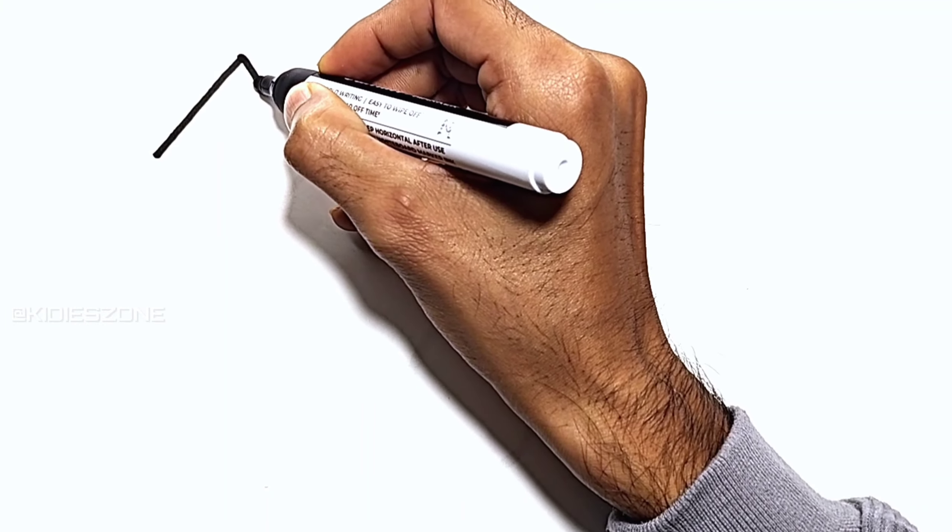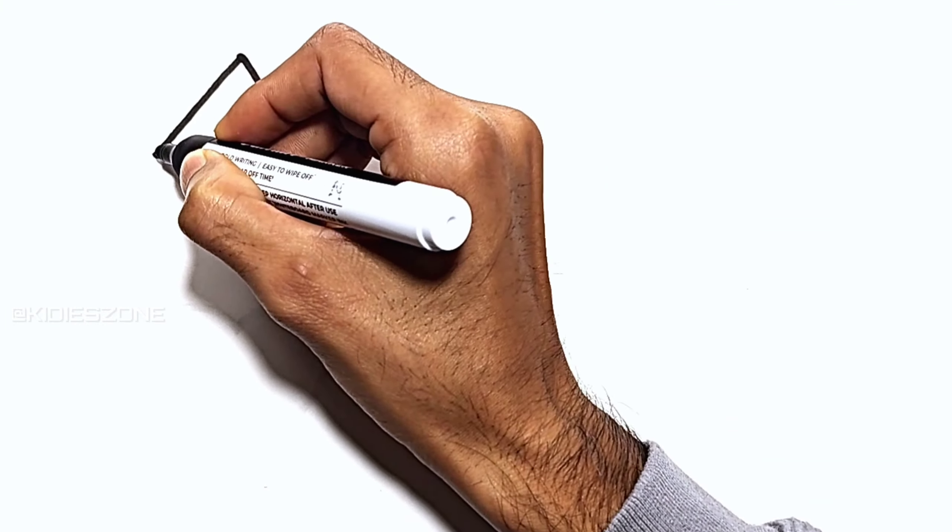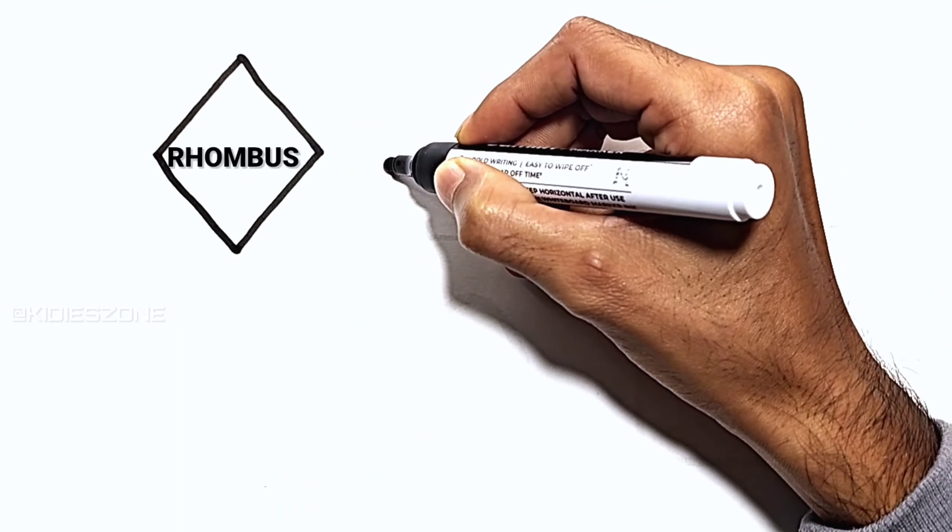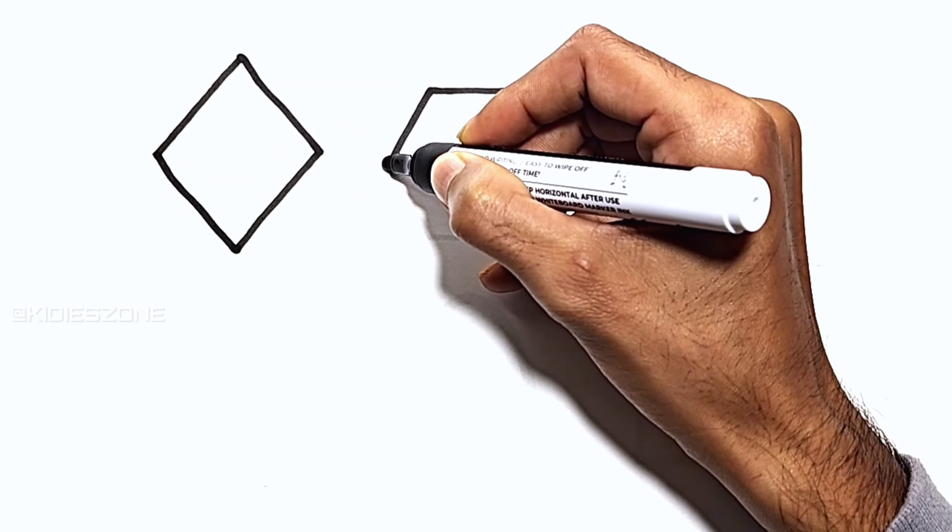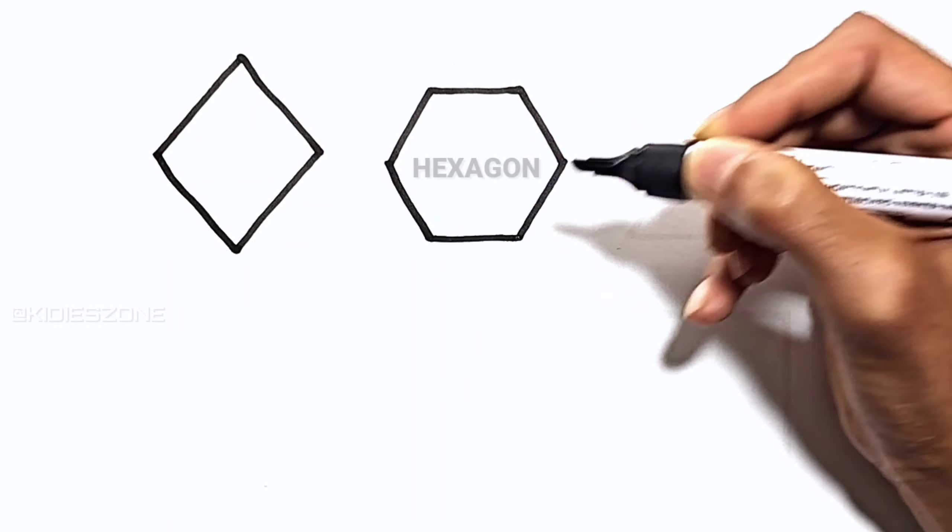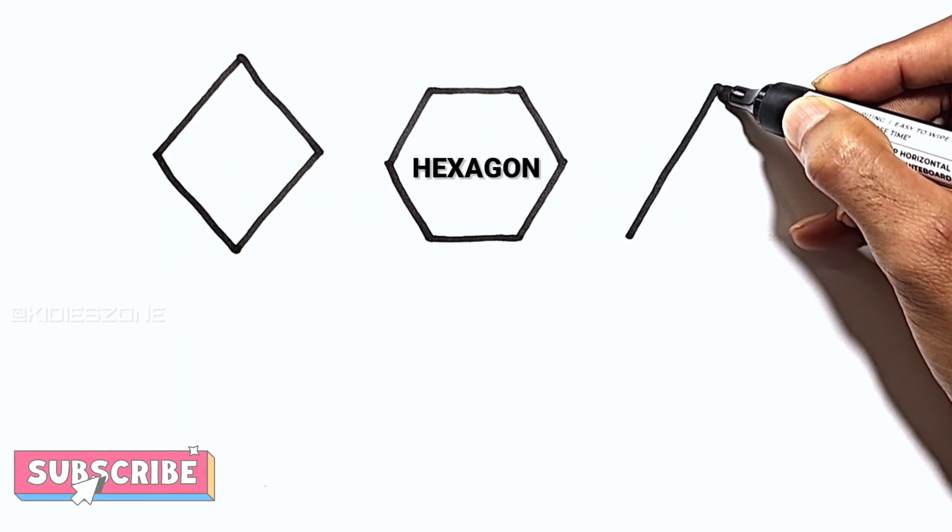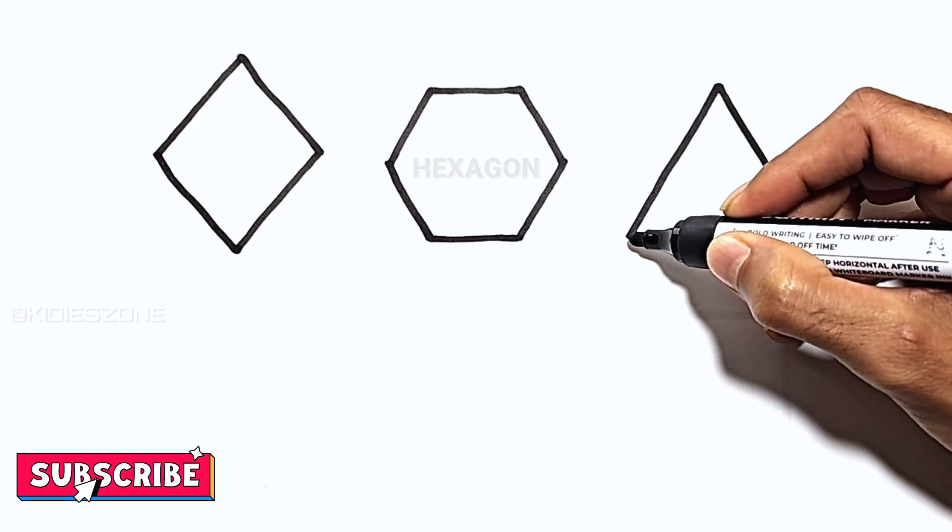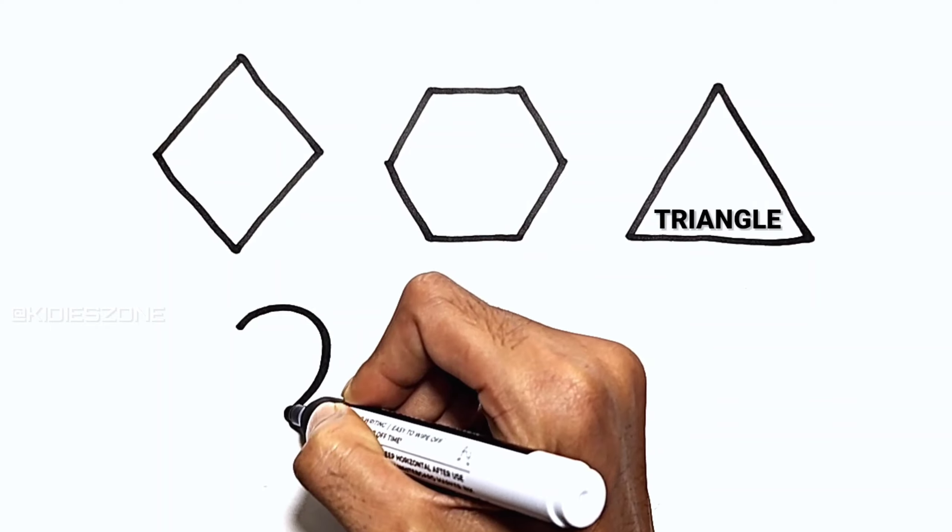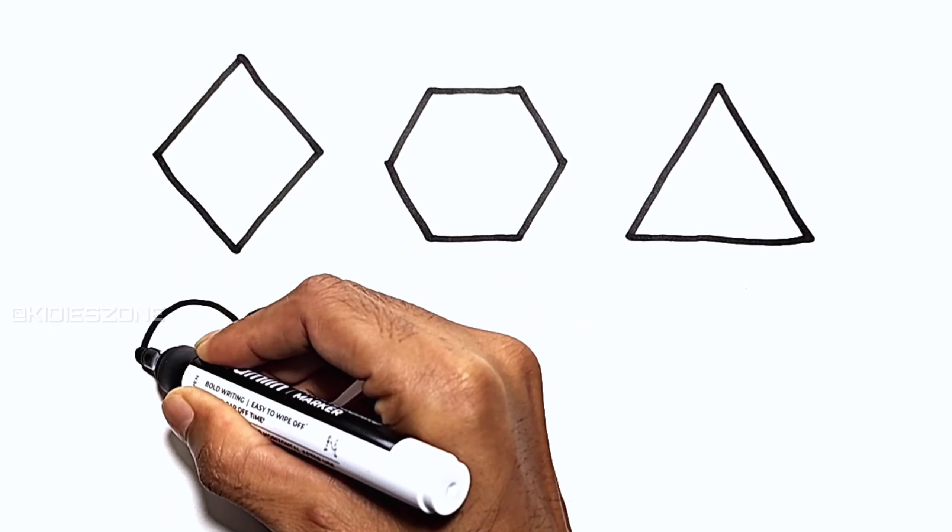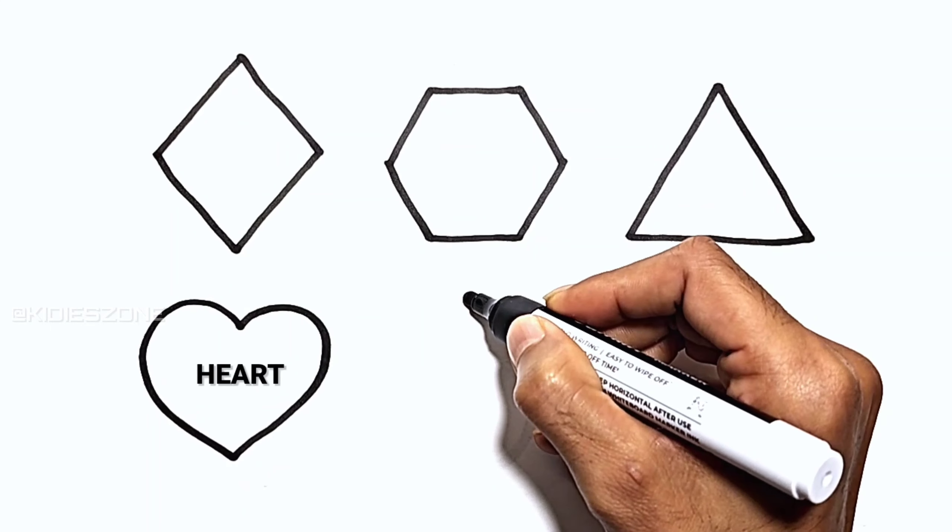Rhombus, hexagon, triangle. Y and Z, now I know my ABC's, next time won't you sing with me.